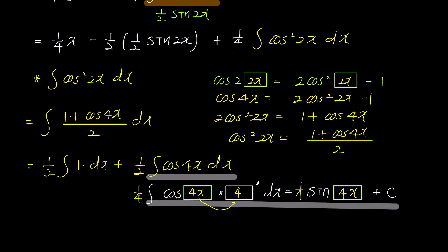Now, if we substitute the result of integrating cosine 4x into the equation above, we can find the integral of cosine squared 2x as 1 over 2x plus 1 over 2 times 1 over 4 sine 4x plus c.